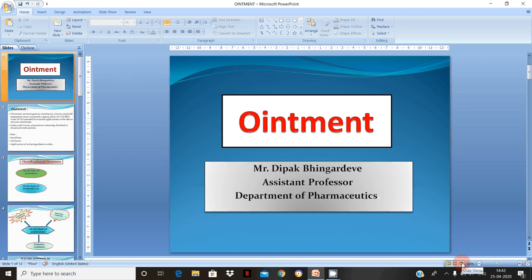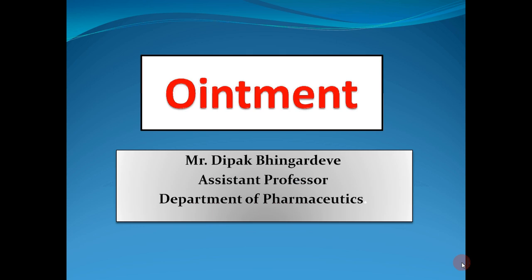Hello everyone. As we know, the types of dosage forms are solid dosage form, liquid dosage form, and semi-solid dosage form. Particularly, the examples of semi-solid dosage forms are cream, paste, gel, jellies, and ointment. In this video, we will study a few details about the ointment.